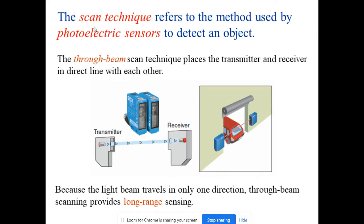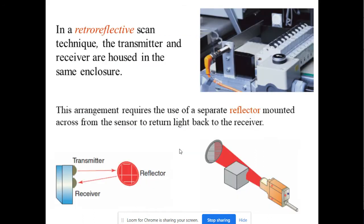The other type is how we use this scan technique, which refers to the method used by photoelectric sensors. This through-beam scan technique places the transmitter and receiver in direct line with each other. We put the car when it goes through, so it will scan. The light beam travels in one direction through the beam. When the object is blocked, there is no transmission between the transceiver and receiver.